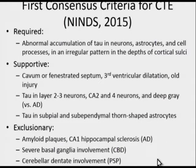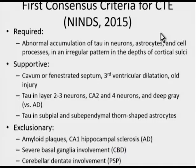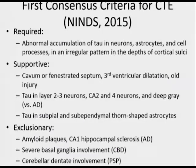The first consensus criteria for CTE came from a conference held just two months ago, with the report available on the NINDS website. A group of neuropathologists determined required findings, supportive findings, and exclusionary findings for the CTE diagnosis. As cases are studied more systematically—including not just athletes but also civilian and military populations—these criteria will allow grading similar to the pathologic diagnosis of Alzheimer's disease.